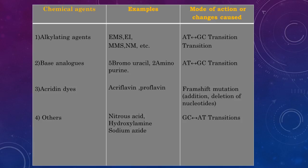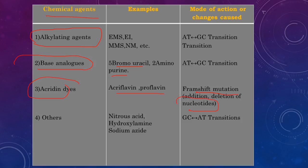Chemical agents used for mutation include alkylating agents, base analogs such as bromouracil and 2-aminopurine, and acridine dyes like acriflavin and proflavin, which cause frameshift mutation — addition or deletion of nucleotides. Others such as nitrous acid, hydroxylamine, and sodium azide cause guanine, cytosine, adenine, thymine transitions.